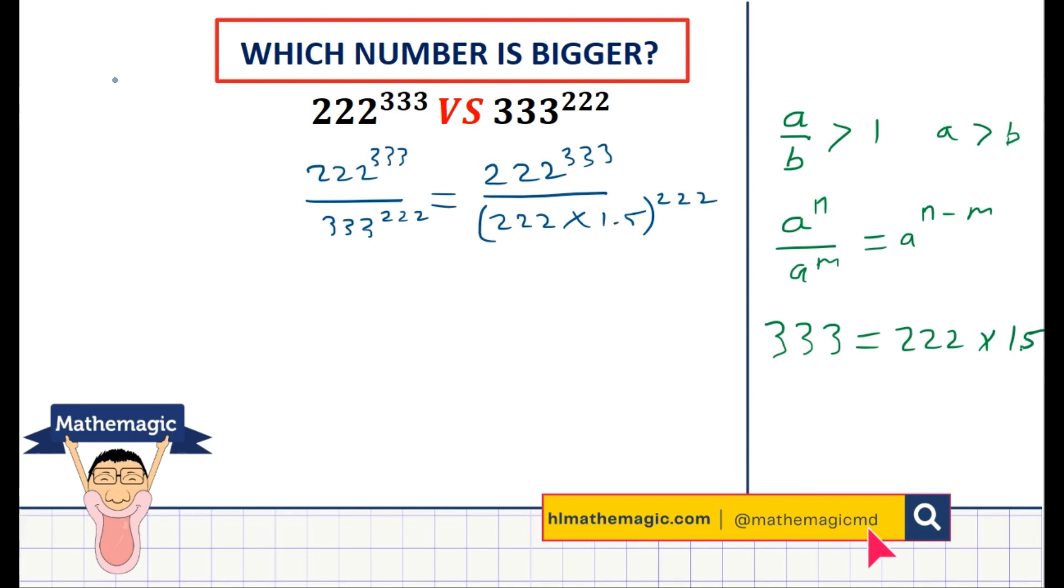Now this power 222 can be distributed to the 222 and the 1.5. Using the rule a times b to the power n equals a to the power n times b to the power n, we can distribute the powers. And so let's distribute the powers in the denominator.